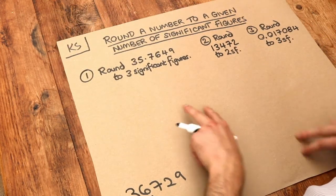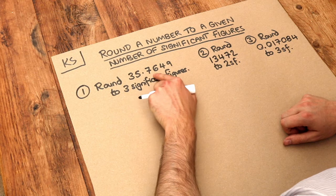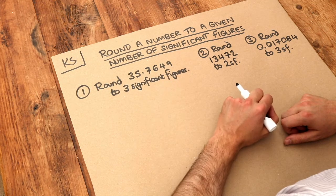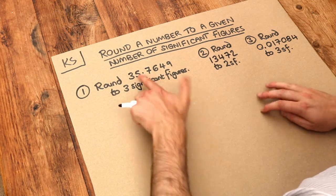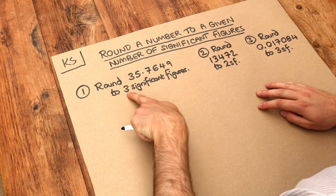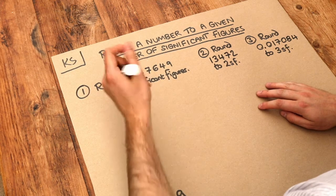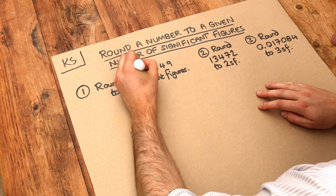So let's look at this first example. We want to round 35.7649 to three significant figures. Now that means, starting from the first digit, we want to keep the first three digits for our number. So 1, 2, 3.